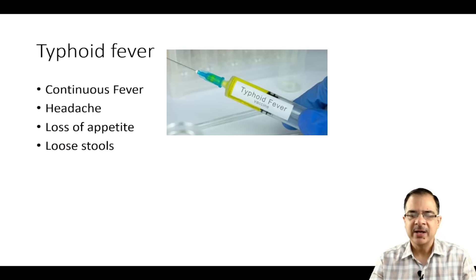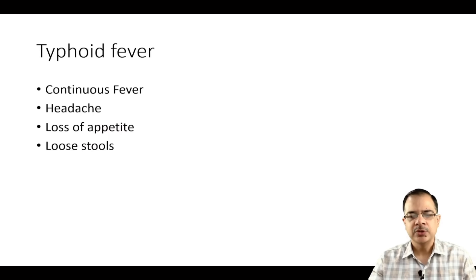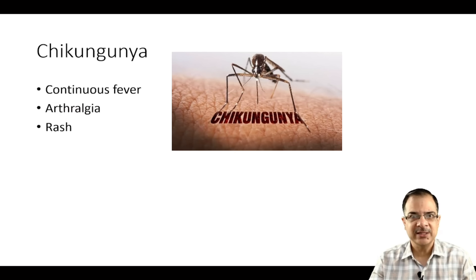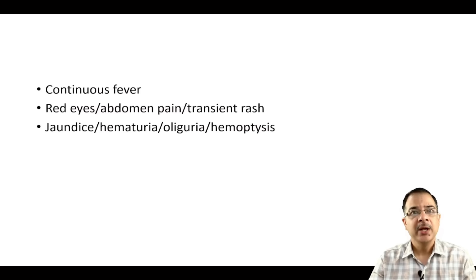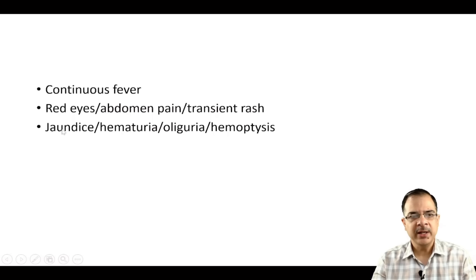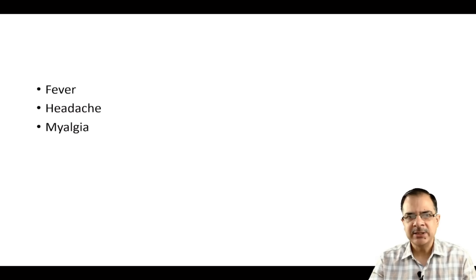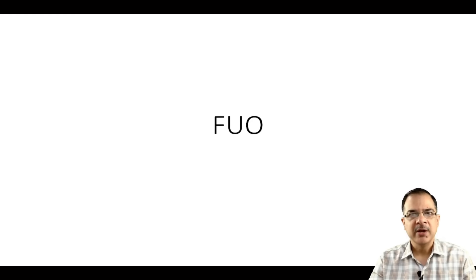Continuous fever with headache, loss of appetite, and loose stools is typhoid fever. There is also a characteristic step-ladder pattern — fever increases gradually: 99°F, 100°F, 101°F, 102°F over successive days. Continuous fever with arthralgia and rash suggests chikungunya, where arthralgia is the more severe symptom. Continuous fever with red eyes, abdominal pain, transient rash, jaundice, hematuria, oliguria, or hemoptysis is suggestive of leptospirosis. Fever with headache and myalgia as non-specific symptoms could be scrub typhus.